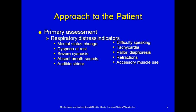Other indicators of respiratory distress include dyspnea at rest and severe cyanosis. The presence of cyanosis leads you to believe the patient is hypoxic, but the absence of it does not mean they're not hypoxic. For example, a person who is severely anemic can be severely hypoxic without showing signs of cyanosis. Absent or diminished breath sounds, audible noises of any kind, and difficulty speaking in full sentences are also indicators. Tachycardia, being pale and sweaty are additional signs.